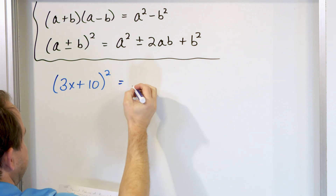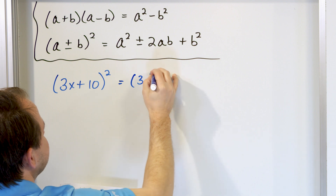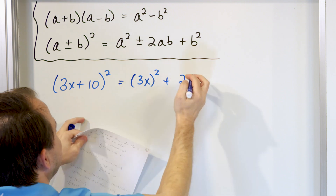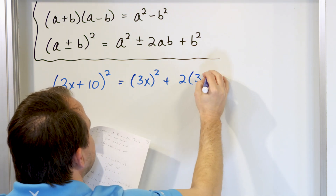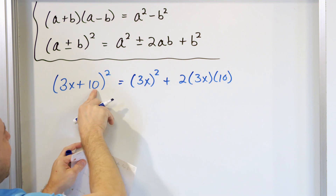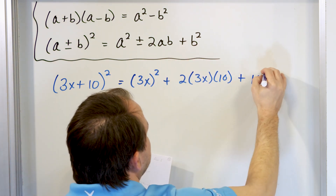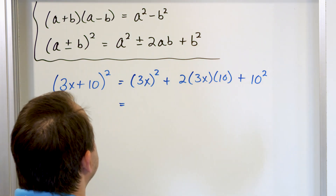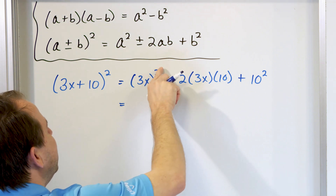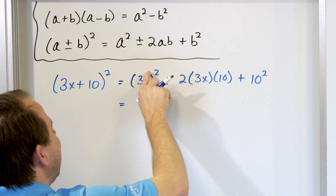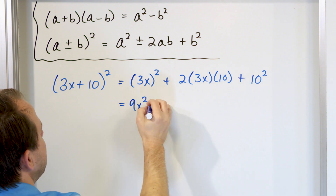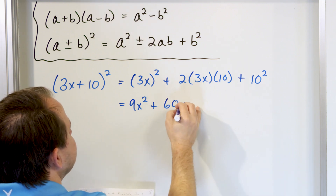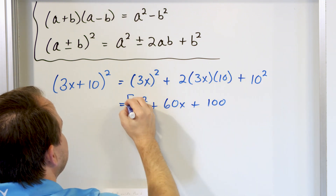Where a is just the first thing, which is 3x. So the first term is (3x)². Plus 2 times the first term times the second term: 2 · 3x · 10. Then plus the last term squared: 10². Now (3x)² means the square applies to both 3 and x, so you get 9x². Two times 3 is 6, times 10 gives 60x. And 10² is 100. So the final answer is 9x² + 60x + 100.